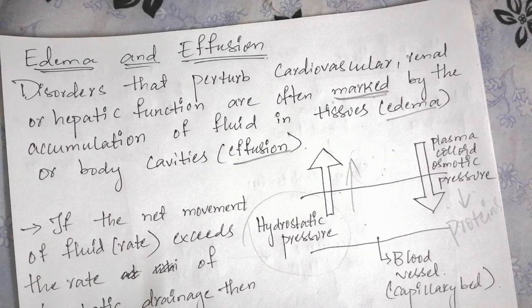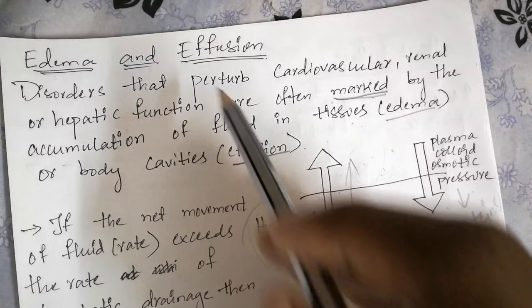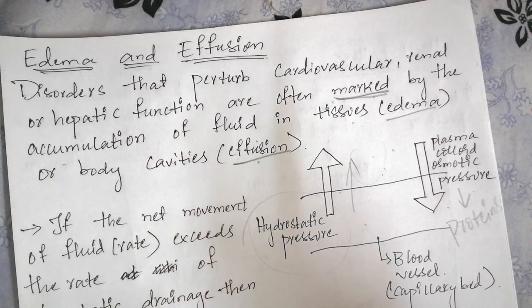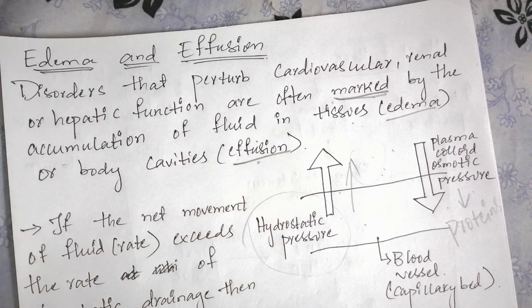Disorders that perturb the cardiovascular, renal, or hepatic functions are often marked by the accumulation of fluid in tissues and body cavities. 'Perturb' basically means to alter the normal state of something. So edema and effusion are signs and symptoms of the underlying diseases which alter cardiovascular, renal, or hepatic functions.